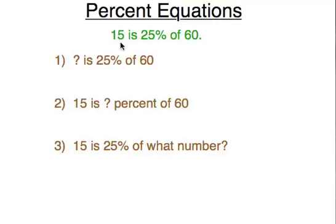The first type is where the first number is missing, and it would read: What is 25% of 60? The second type is where the percent is missing: 15 is what percent of 60? And the third type is where the third number is missing, that is the number after the word of: 15 is 25% of what number?